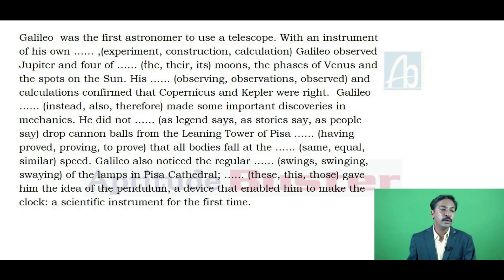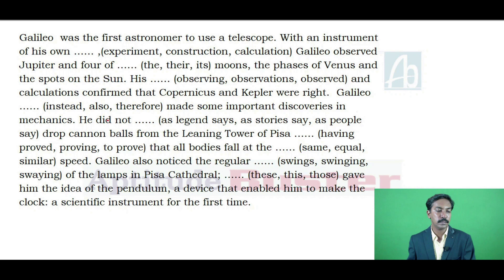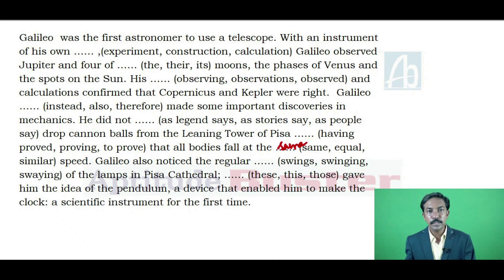Try it out. The passage reads: 'Galileo was the first astronomer to use a telescope with an instrument of his own dash. Galileo observed Jupiter and four of the dash moons, the faces of Venus and the spots on the sun. His dash and calculations confirmed that Copernicus and Kepler were right. Galileo dash made some important discoveries in mechanics. He did not dash drop cannon balls from the leaning tower of Pisa, dash that all bodies followed the same dash speed.' Galileo also noticed the regular dash of the lamps in Pisa cathedral. Dash gave him the idea of the pendulum, a device that enabled him to make the clock a scientific instrument for the first time.